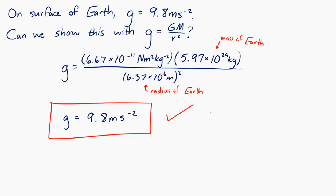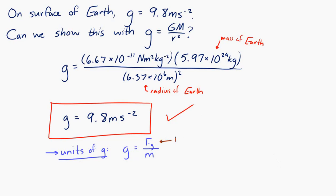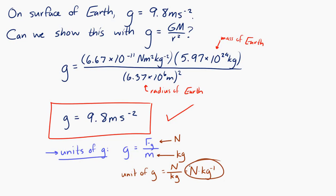One other thing: the units of g. Since gravitational field strength is defined as gravitational force per mass, the units suggested by the equation are Newtons divided by kilograms — Newtons per kilogram. So you can use either m/s² or N/kg for gravitational field strength; they're equivalent.